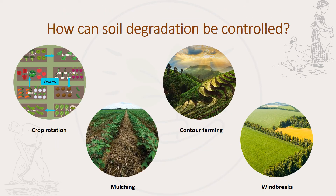To control soil degradation, we make sure that we apply sustainable agricultural methods. We apply crop rotation, practice contour farming, practice mulching, and also plant windbreaks so that we can protect the area from wind. These are just a few techniques or practices that we can use to ensure that we control soil degradation.